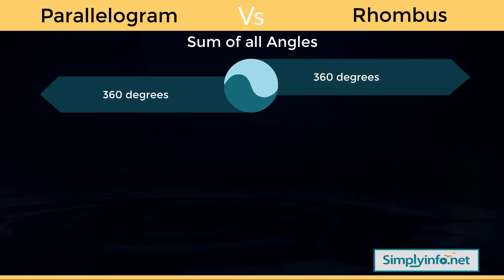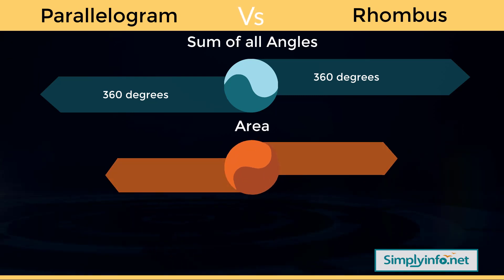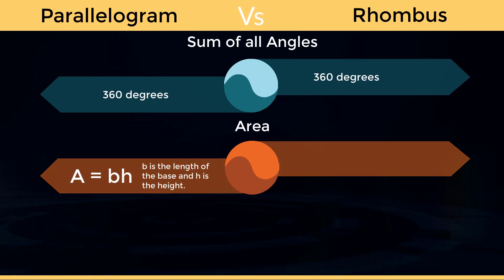Sum of all angles in rhombus is 360 degrees. Area of parallelogram: A equals bh, where b is the length of the base and h is the height.